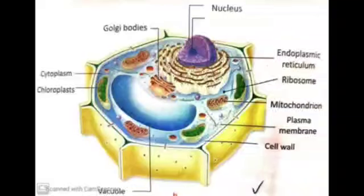If we talk about the structure of plastids, they consist of many membrane layers embedded in a ground substance called stroma. They are quite similar to mitochondria in their structure but they are slightly bigger in size.